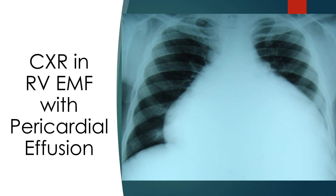Chest X-ray in advanced cases of right ventricular endomyocardial fibrosis often shows gross enlargement of the cardiac silhouette, predominantly contributed by right atrial enlargement. This chest X-ray from another case shows pericardial effusion also contributing to the enlargement. Varying degrees of pericardial effusion are a common association of severe right ventricular EMF with systemic venous congestion and anasarca.